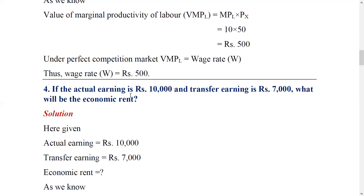When the doctor works in the clinic, the income is 1,00,000. The minimum expectation to stay in the hospital is 60,000 — that is the transfer earning. So economic rent = actual earning minus transfer earning = 1,00,000 minus 60,000 = 40,000. In another example with a piece of land: actual earning is 1,00,000 and the transfer earning is 60,000, so economic rent is again 40,000.